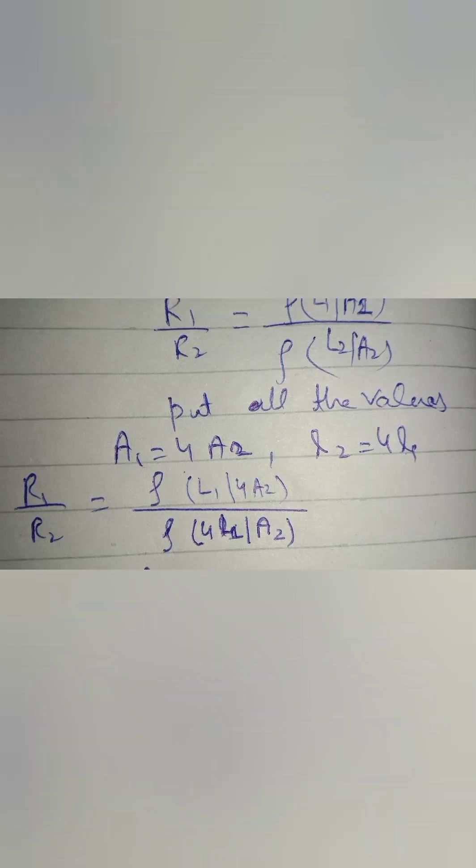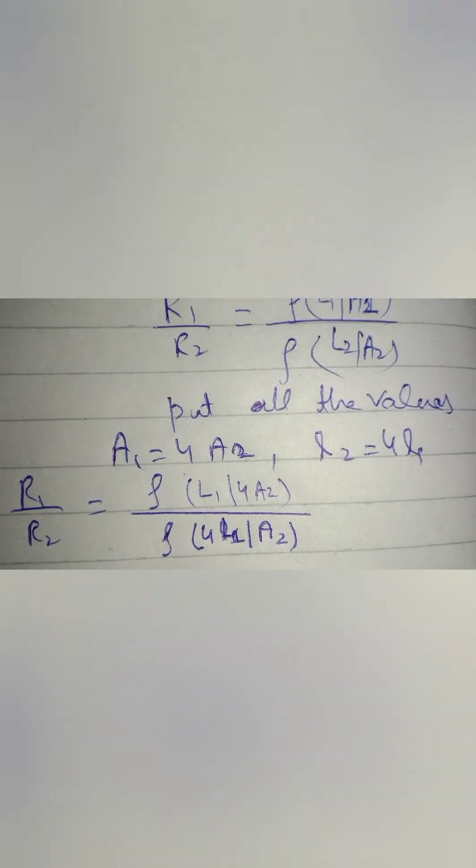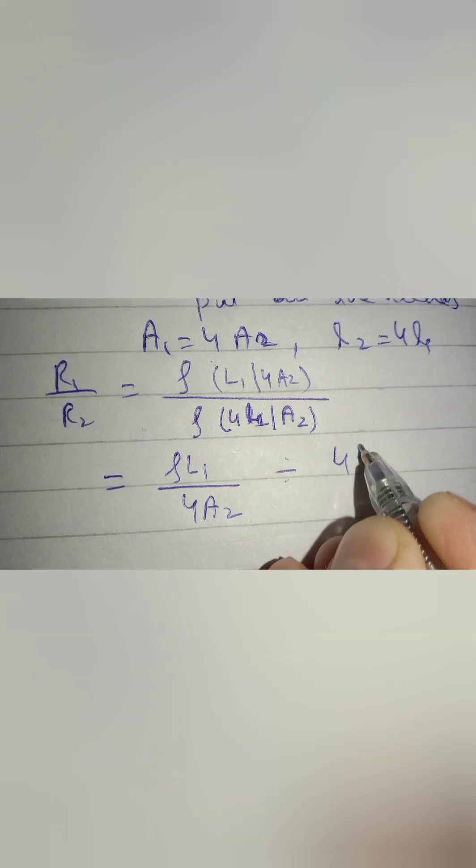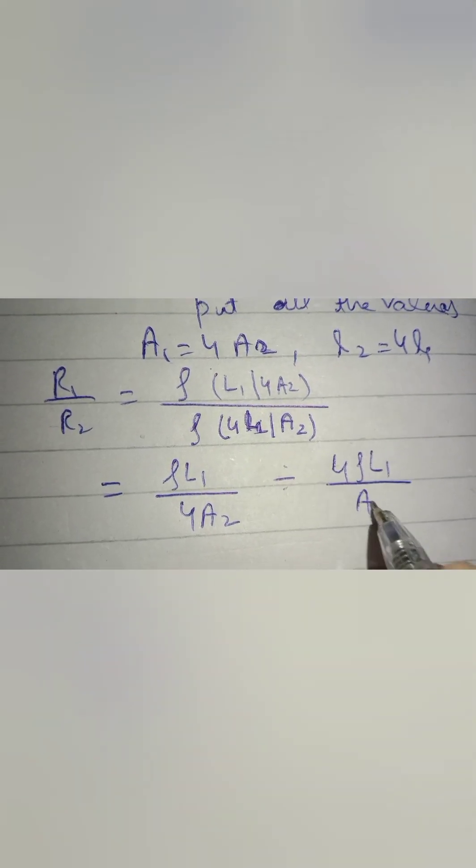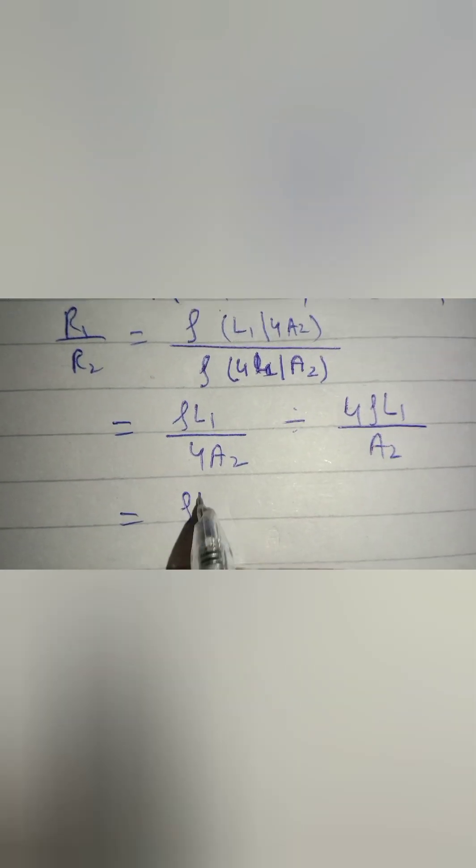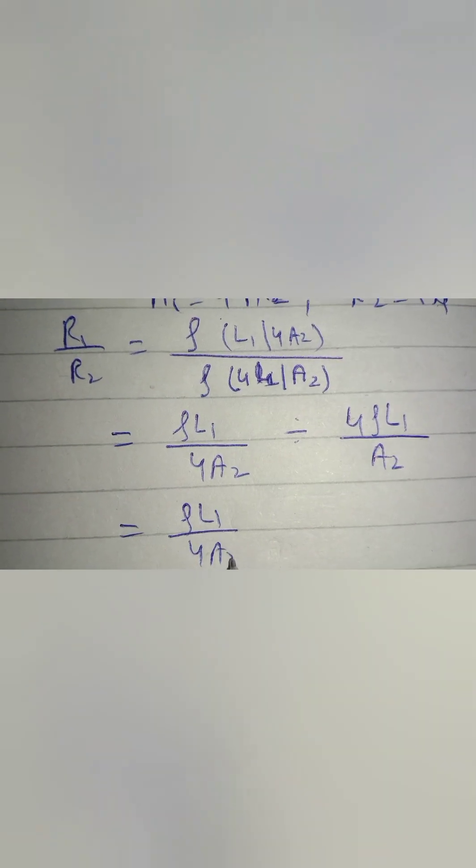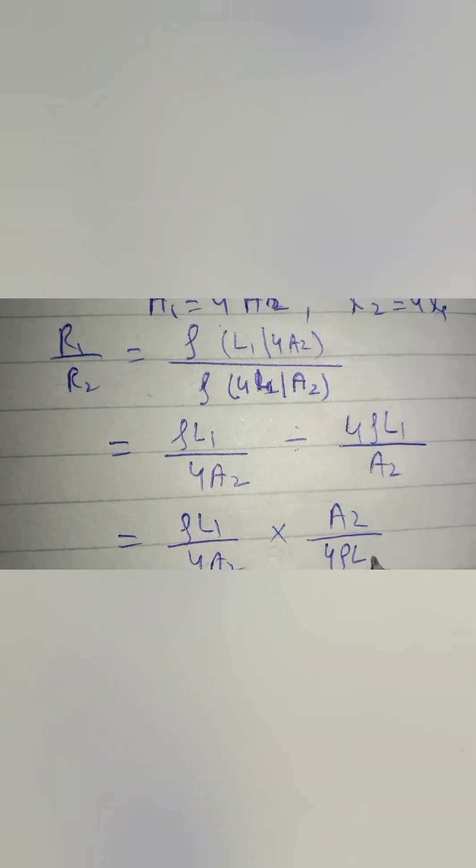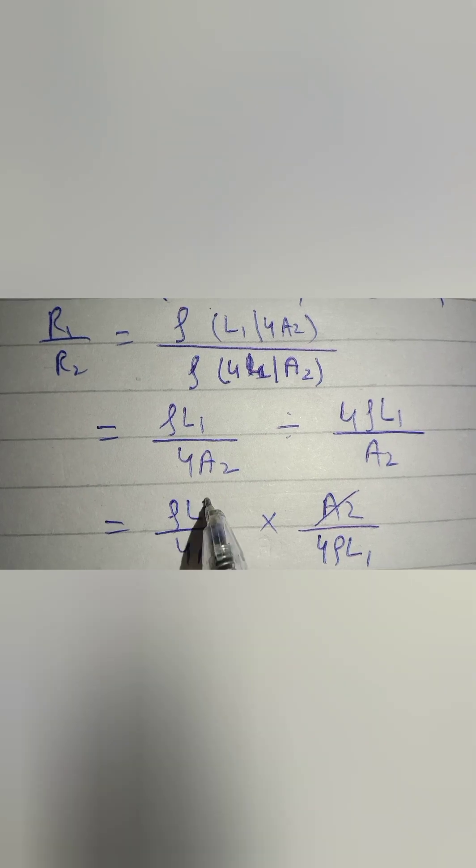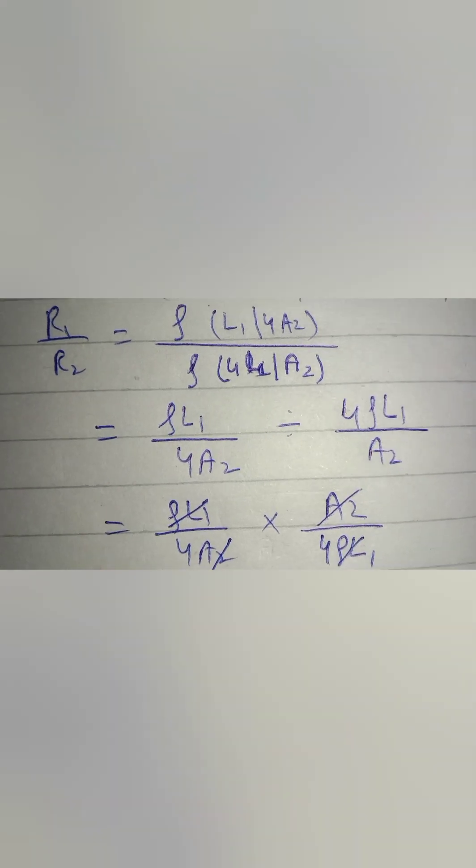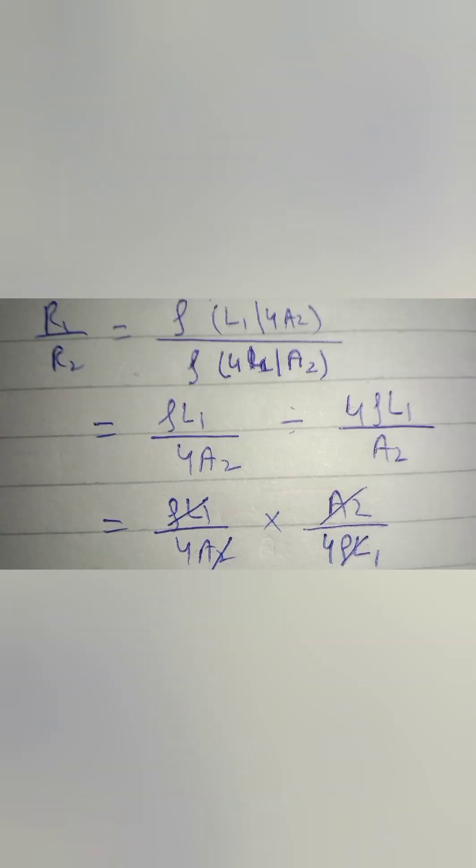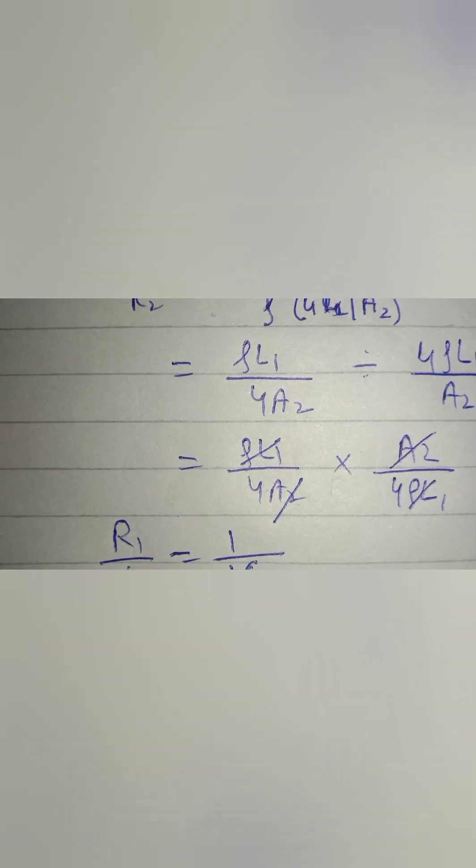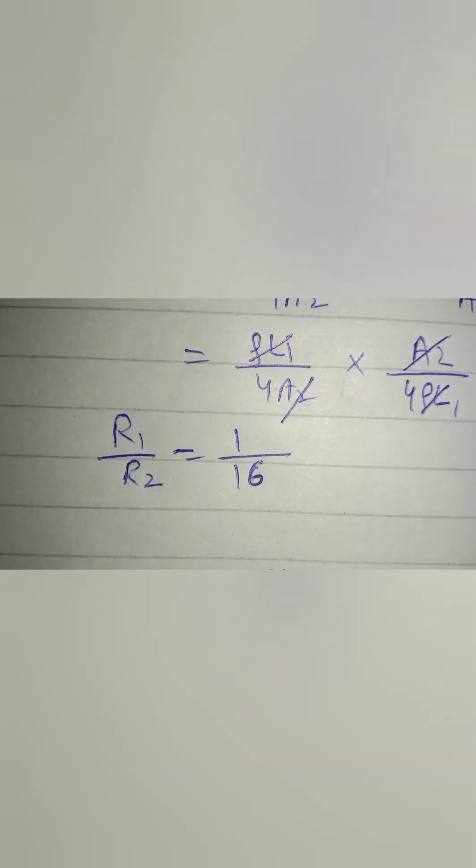We have obtained the equation now in terms of L1 and A2. Now solve it: ρL1 divided by 4A2 divided by 4ρL1 over A2. Change division into multiplication: A2 divided by 4ρL1. A2 gets cancelled, ρL1 gets cancelled, so we are left with 1 over 16.